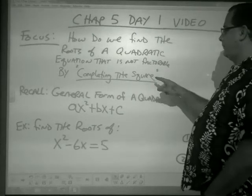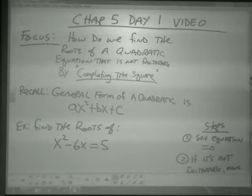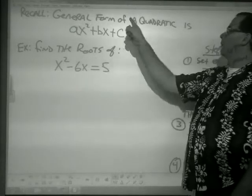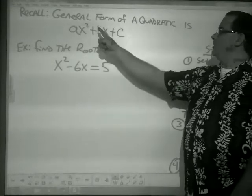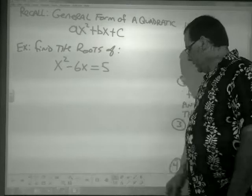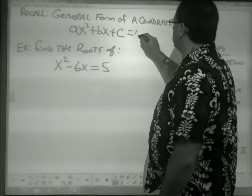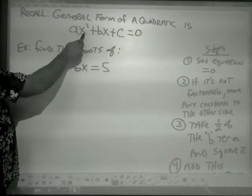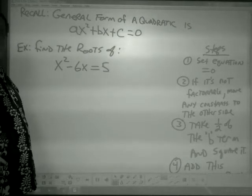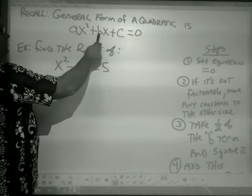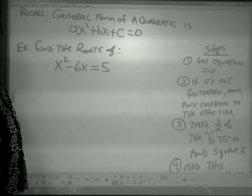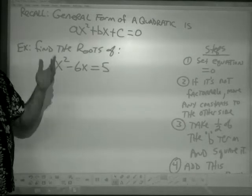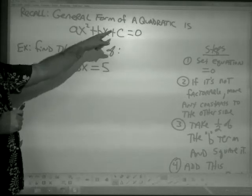Recall the general form of a quadratic: ax² + bx + c = 0. The a is always the number in front of x squared — if there's no number, it is 1. The b is the number in front of x, and c is the constant term that stands all by itself, not next to an x. You have to remember that general form.